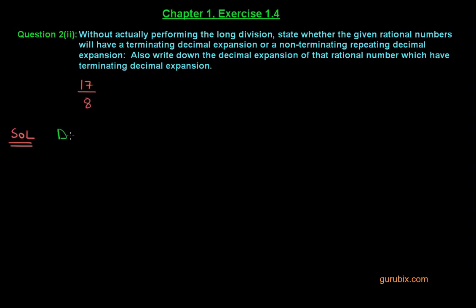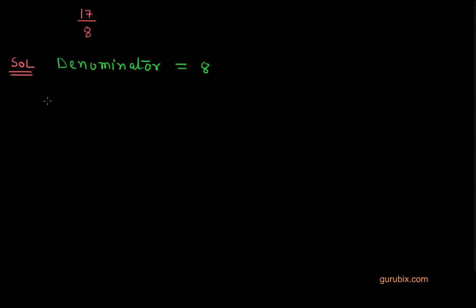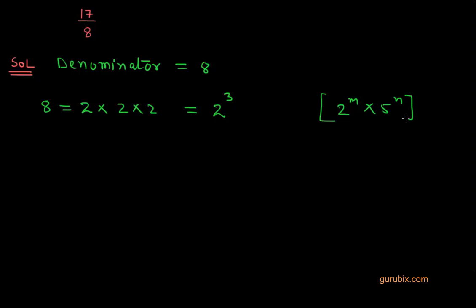First of all, we shall look at the denominator, and the denominator is 8. We can write 8 in its prime factors as 2 into 2 into 2, or we can write it as 2 to the power 3. This is just according to the form 2 to the power m into 5 to the power n, because we can also write 2 to the power 3 multiplied by 5 to the power 0. We know that 5 to the power 0 equals 1, and we can multiply any number by 1.